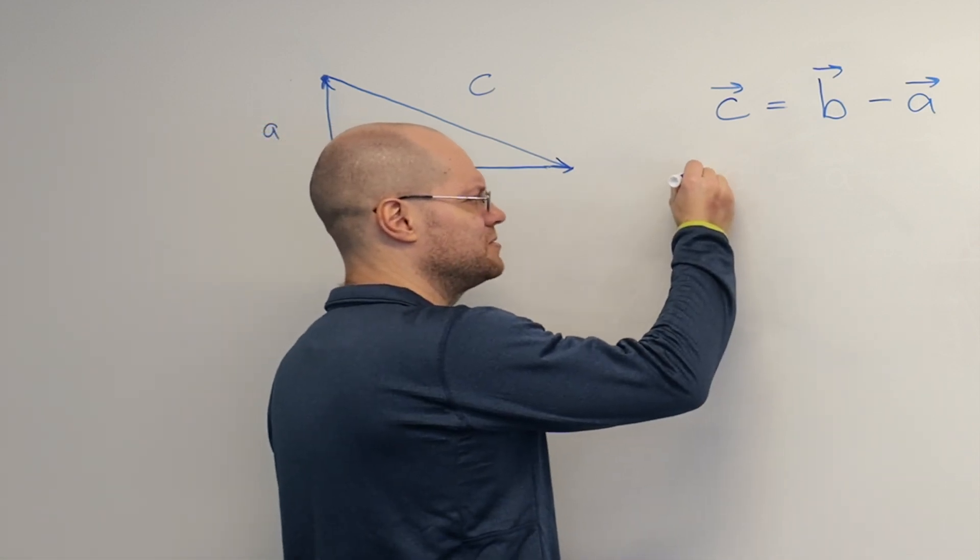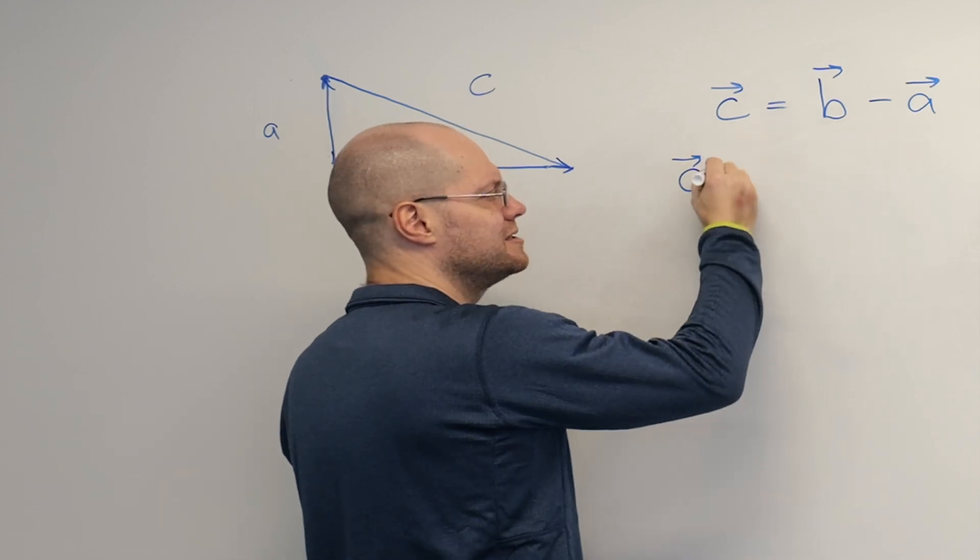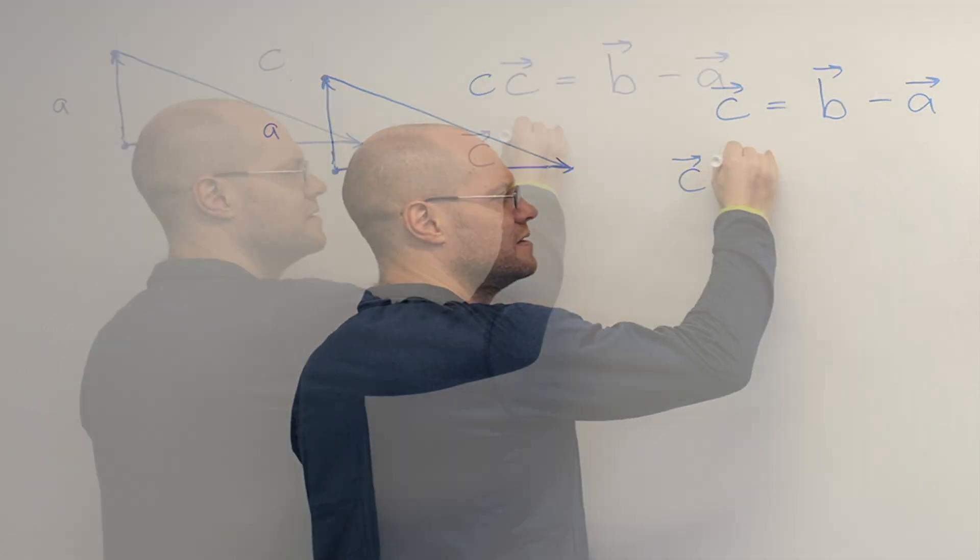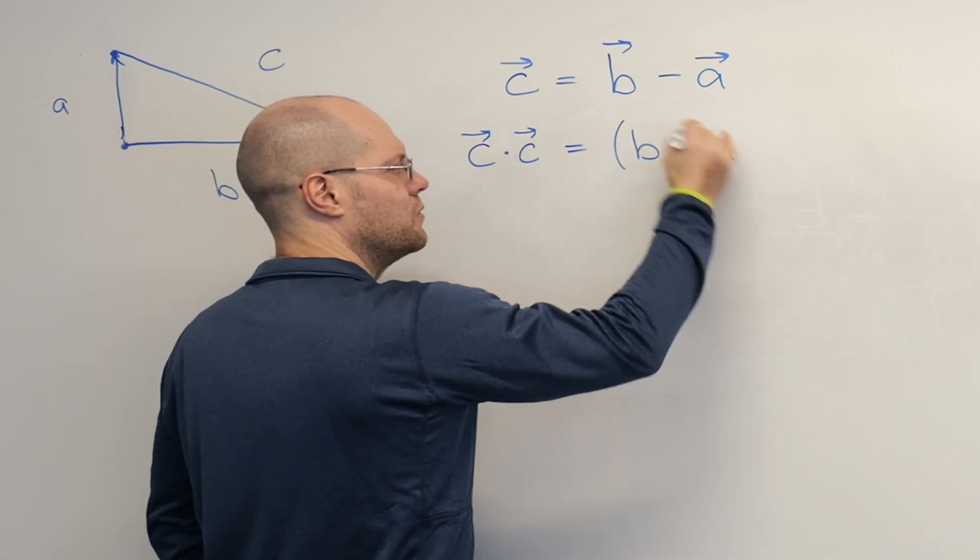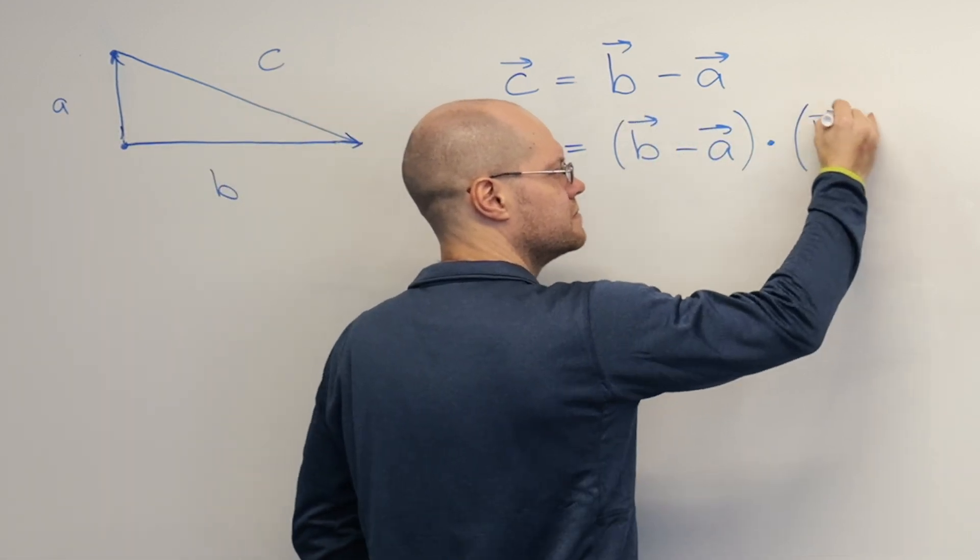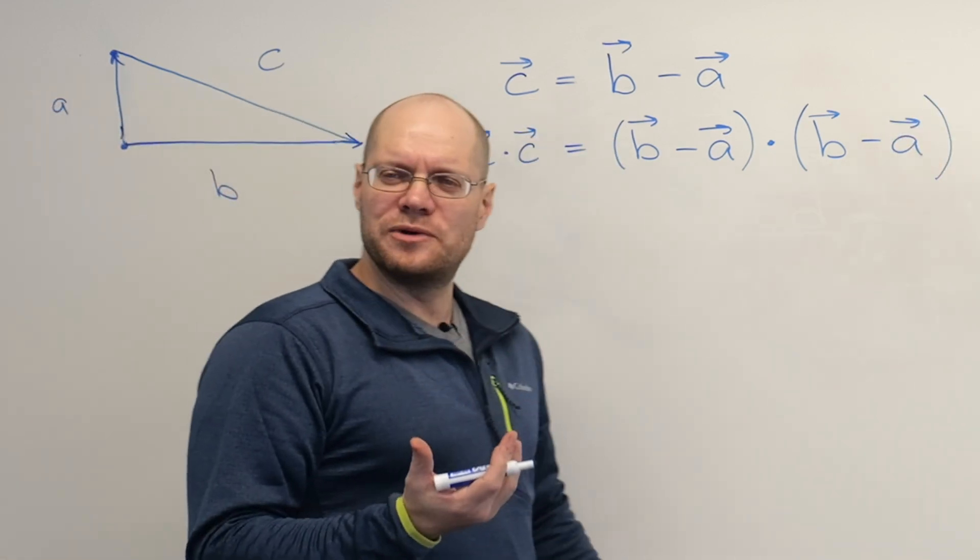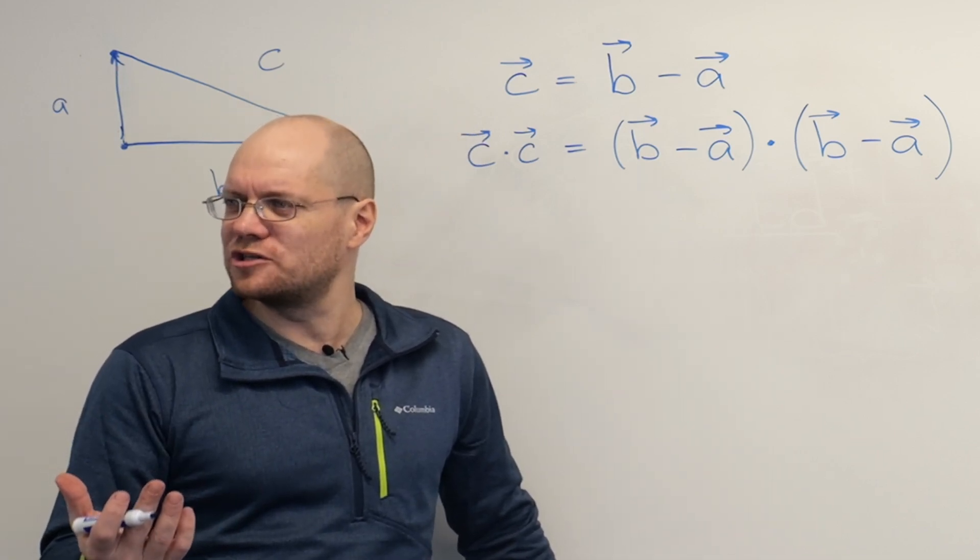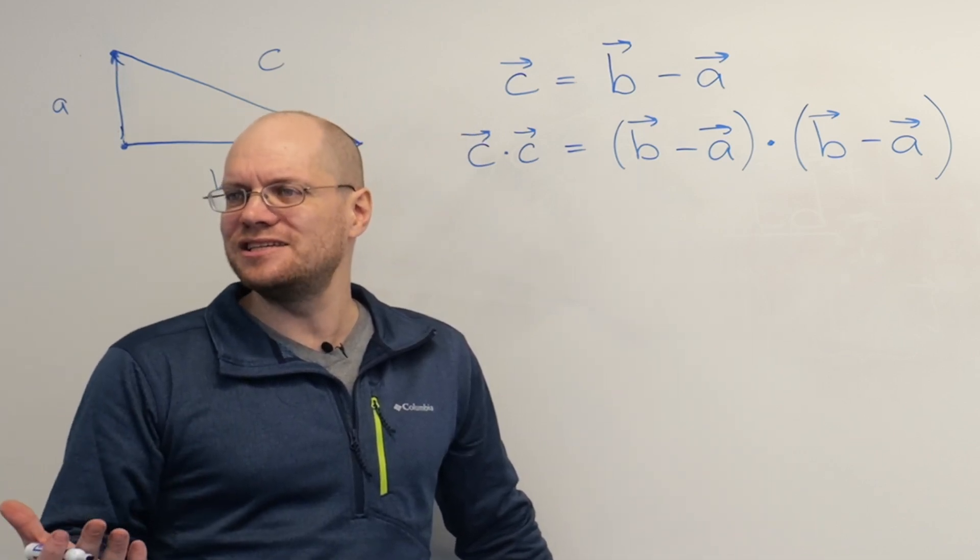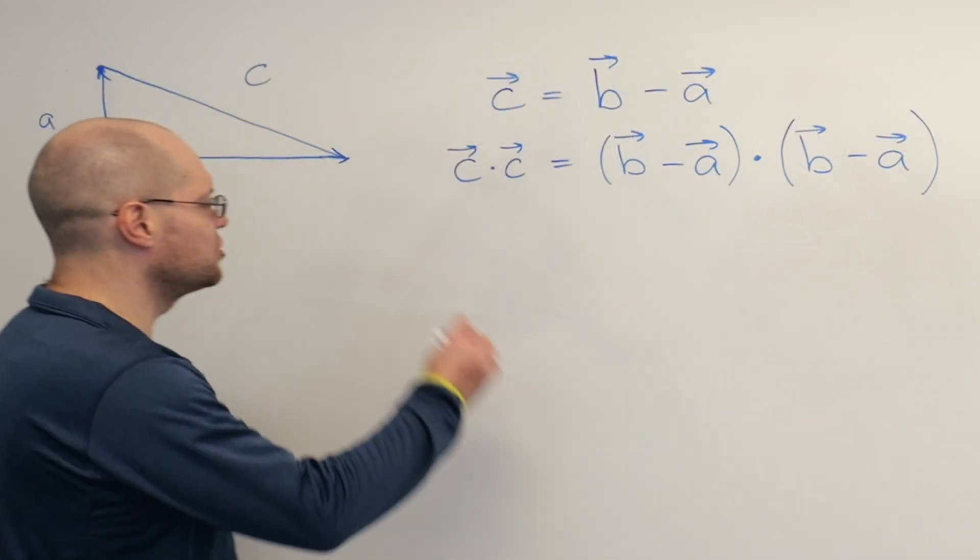I believe this step to be completely uncontroversial. If one vector equals another, then its dot product with itself equals the dot product of the other vector with itself. Why are we dotting both sides? I think in this case because we know what we're going towards. We want to have C squared. And that's the way to get C squared.